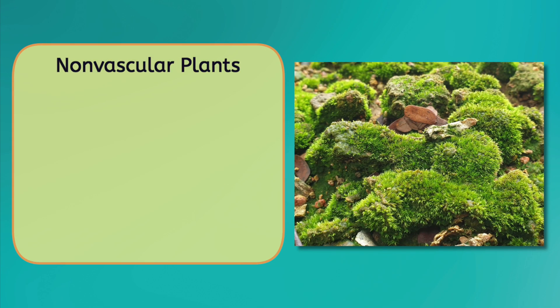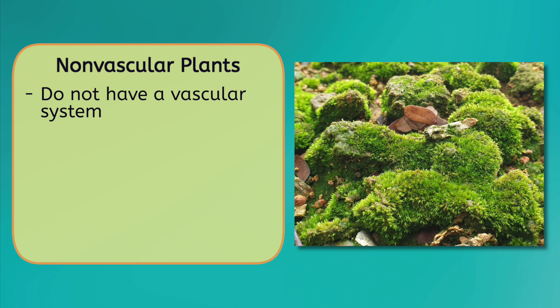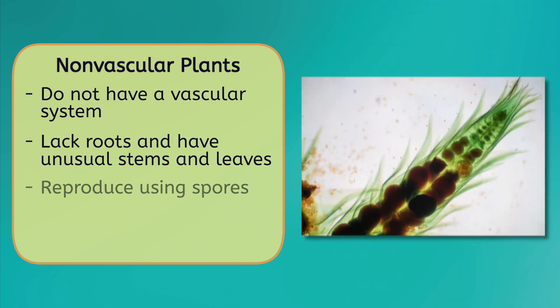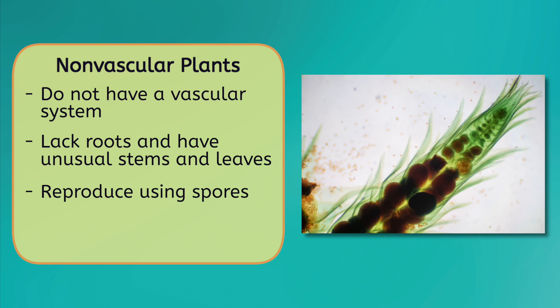Nonvascular plants are unique in that they do not have a vascular system, instead relying on diffusion through non-specialized cells to transport materials. Additionally, they lack roots and have unusual stems and leaves, which gives them an appearance that is very different from most other plants. Nonvascular plants reproduce using spores, which are tiny reproductive cells that contain genetic information to create a new plant.